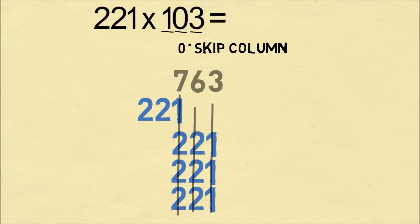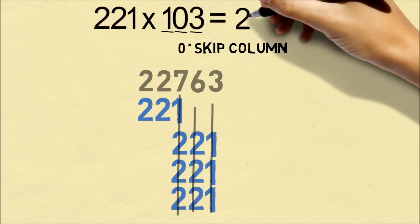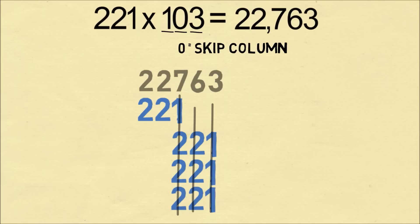And our final two columns are easy. We just have one digit in each. So we have a 2 in the second to last column, and finally, we have a 2. And that's going to be our answer, 22,763.